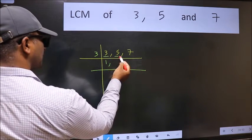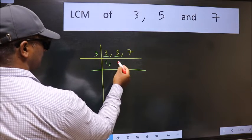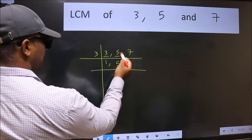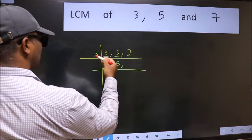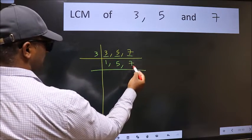The other number 5 is not divisible by 3 so we write it down as it is. The other number 7 is not divisible by 3 so we write it down as it is.